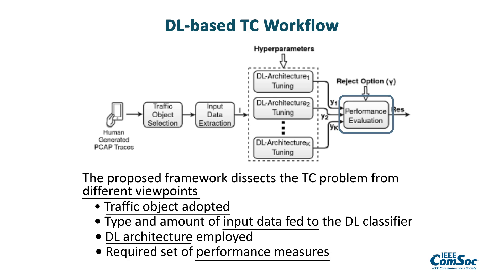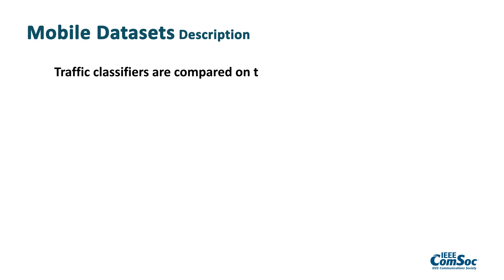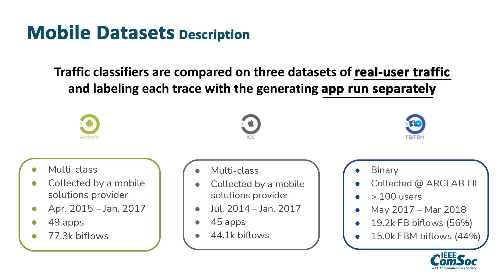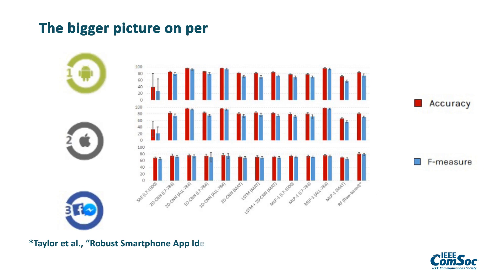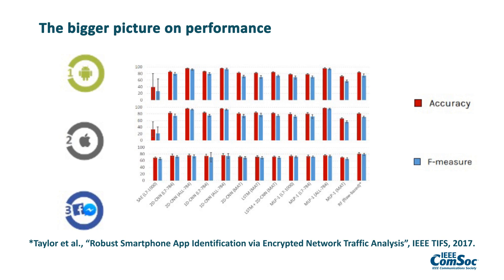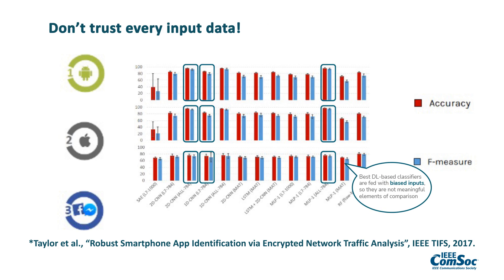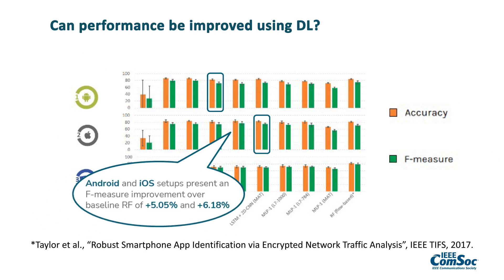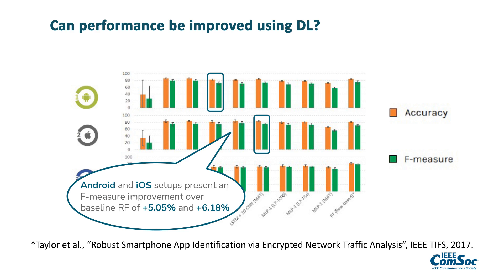Finally, our workflow provides a comprehensive set of both overall and per-class performance measures. To perform evaluation via our deep learning framework, we leverage three different human-generated mobile traffic datasets: two multi-class, respectively Android and iOS, and one binary, Facebook or Facebook Messenger. We can notice that the best performing deep learning classifiers are fed with biased inputs containing fingerprinting metadata or transport level ports. After filtering out these biased classifiers, we compare deep learning methods with a random forest baseline. The results show that in Android and iOS setups, deep learning presents an F-measure improvement over baseline random forests of more than 5% and 6% respectively.